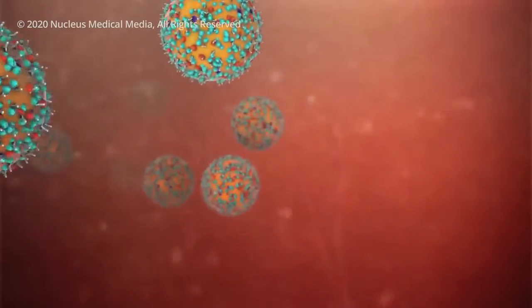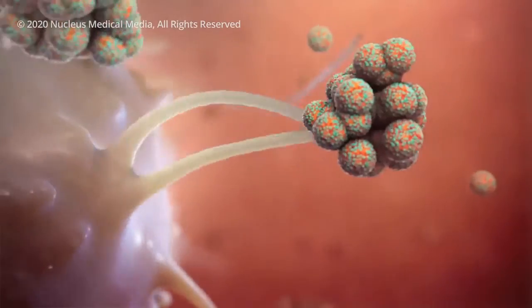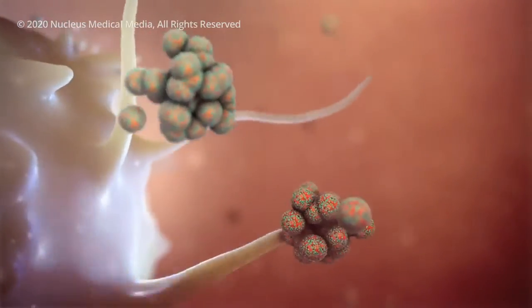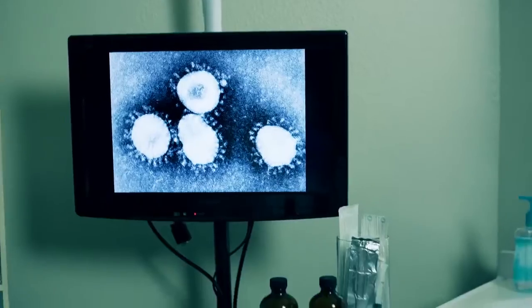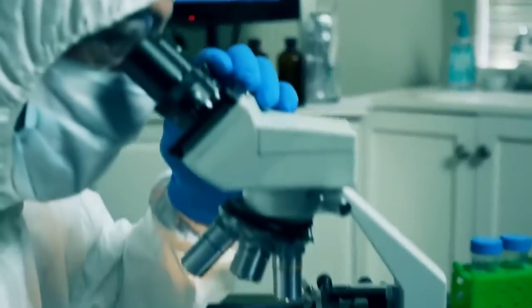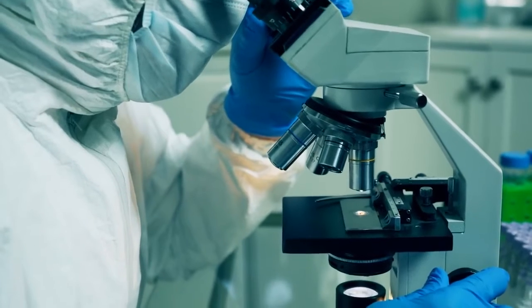If you then catch the real virus at a later stage, your body would recognize it and destroy it. In other words, your immune system is now primed. Collecting evidence on whether this will be possible, safe, and effective is part of what's taking researchers so long to develop a vaccine.